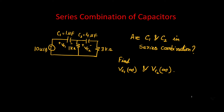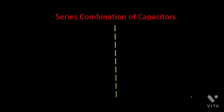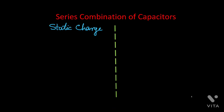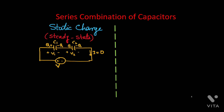I will discuss series combination of capacitors for two cases. The first one is for static charge, which is also called steady state condition. Here you see two capacitors C1 and C2 are connected one after another with the voltage source V. There is no resistance here.